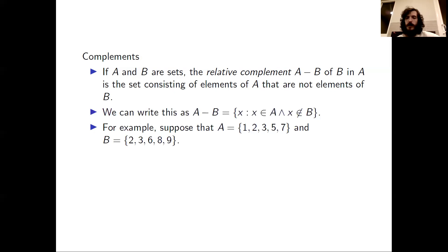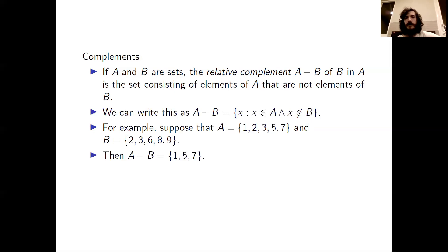If we look at A, we see that 1 is an element of A, but 1 is not an element of B, so that should be in the relative complement of B and A. 2 is in both A and B, so it's not in the relative complement. Same with 3, but both 5 and 7 are elements of A that are not elements of B. So we see that the relative complement of B and A is given by 1, 5, 7. And we can observe that the relative complement of B and A is, by definition, a subset of A.